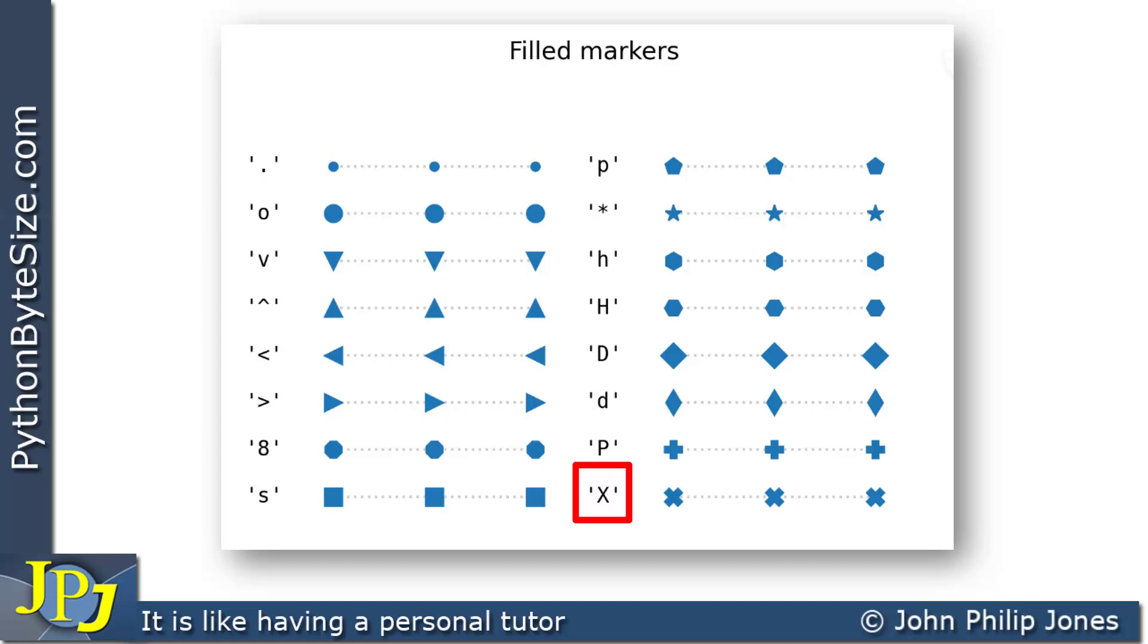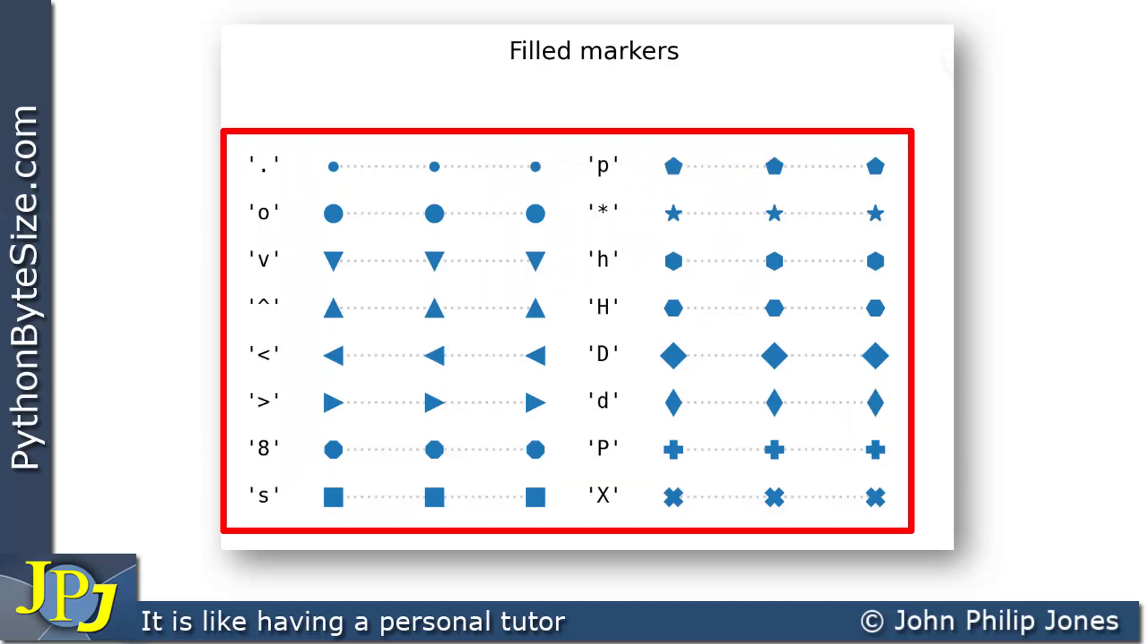And this one here is the uppercase X, we know will give us this shape here. And this, for example, which I haven't shown you in the code, will give you this shape. So you've got a list here of all of the one-character strings and the shapes that they will give you.